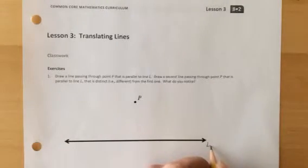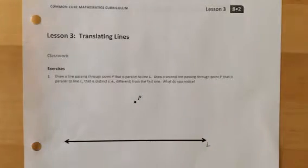So draw a point parallel to line L, and then try to draw a second line passing through P that's also parallel to line L, that is distinct or different from the first one, and then see what you notice.